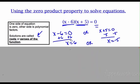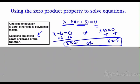Either of those two answers makes the equation true. If x is 6: 6 minus 6 is 0, and 0 times anything equals 0. If x is negative 5: negative 5 plus 5 is 0, and 0 times anything is 0. That's why it works — that's how we find these solutions.